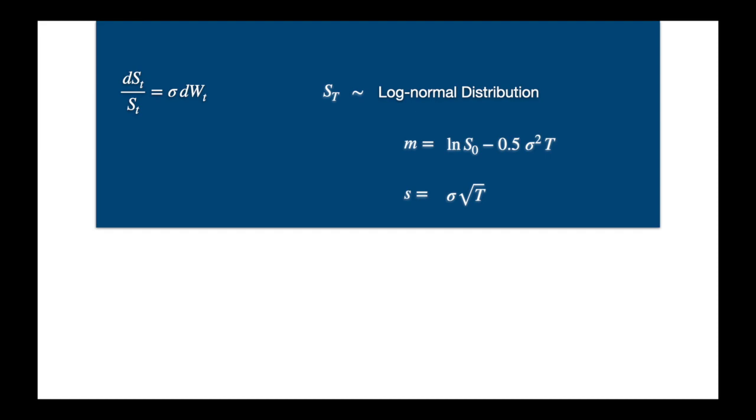To bury the symbols, let's assume the current price of the stock is 10, its implied volatility is 40%, and we're interested in the stock price one year from now. If we plug in these values in the mean and standard deviation, we'll find out that the mean is 2.22 and the standard deviation is 0.4, and now we can remove the symbols.